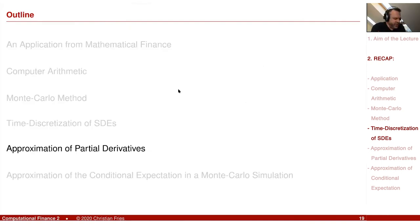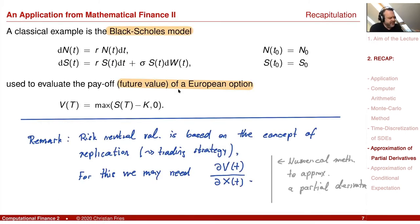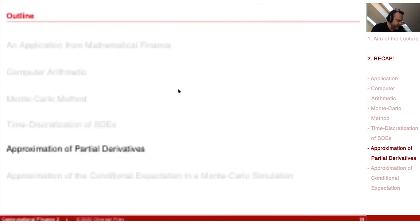Another topic that links back to our application: our motivation was universal pricing theory, but behind it is the ability to perform a replication. For that we need a partial derivative of a value with respect to another value — for example, the initial value of the stochastic process. This is the partial derivative of the expectation of the black box with respect to the initial value of the stochastic process. So we need to approximate partial derivatives.